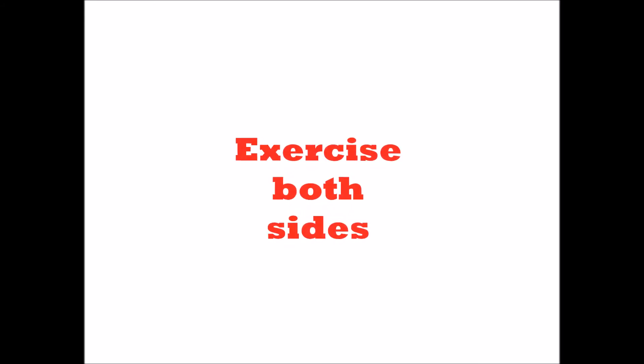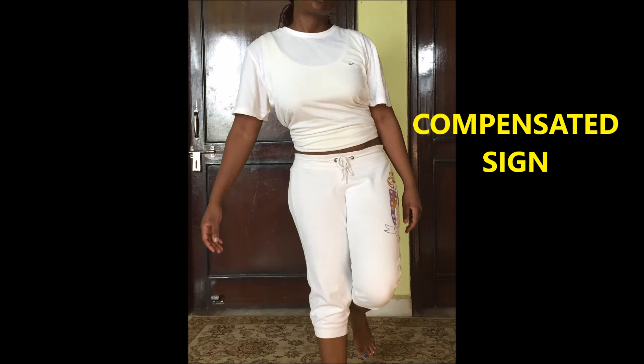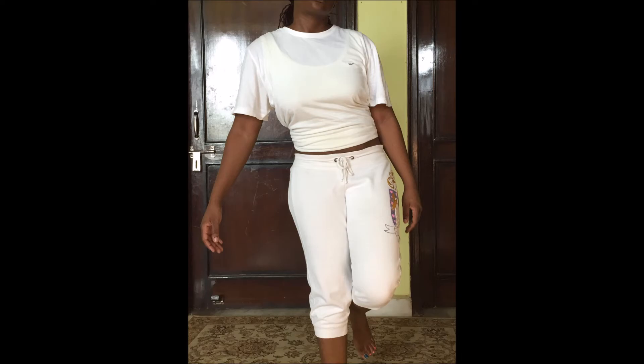The compensated Trendelenburg sign means the person has adjusted to the structural or functional impairment, with compensations made unconsciously over time. While compensation aims to save energy, it results in increased energy expenditure and stress on other body structures — so exercises should be given to both affected and unaffected limbs. Features include leaning of the trunk to the affected side to shorten the weight arm and prevent pelvic drop, possible abduction of the arm on the affected side for balance, and deviation of the head and neck from the midline depending on the degree of compensation.